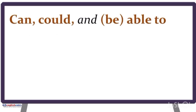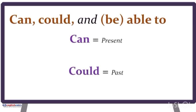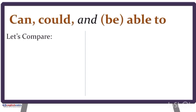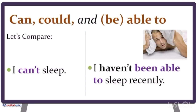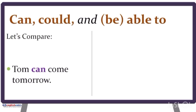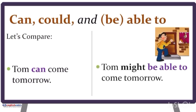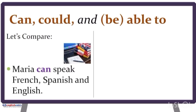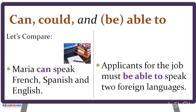Can has only two forms: can, which is the present, and could, which is the past. Sometimes it is necessary to use be able to. For example: Now I can't sleep. But with been able to: I haven't been able to sleep recently. Tom can come tomorrow — Tom might be able to come tomorrow. Maria can speak French, Spanish, and English. Applicants for the job must be able to speak two foreign languages.